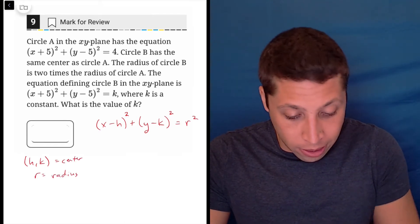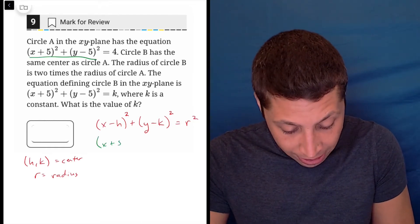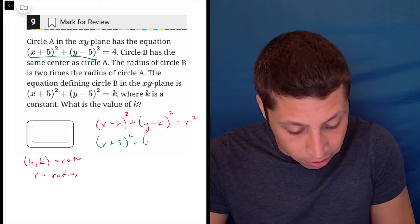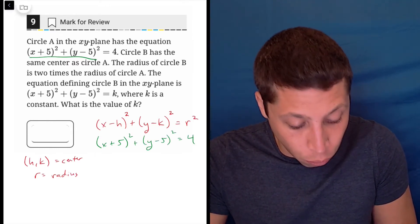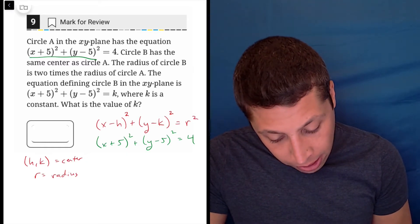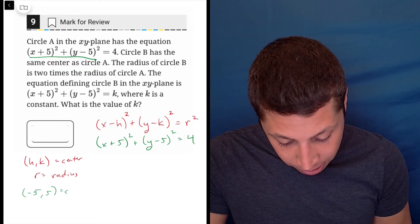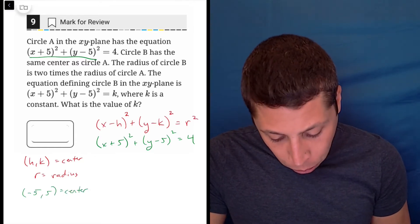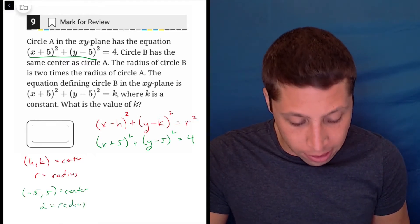So let's line up the one we were given here with the generic formula. That's x plus 5 squared plus y minus 5 squared, and that's equal to 4. So what do we know about this circle? We know that its center is going to be negative 5, 5 is the center, and more importantly for us, the radius is 2.